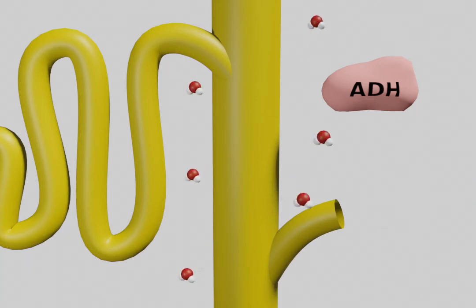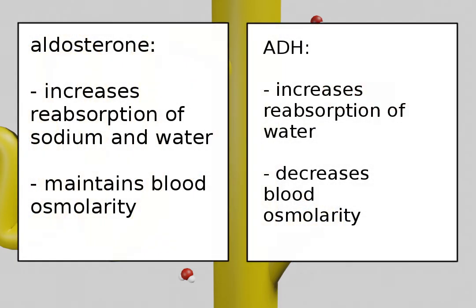So both of these hormones are antidiuretics, but there's a key difference you should notice. Aldosterone increases blood volume by reabsorbing both ions and water, so there's no change in blood osmolarity. ADH increases blood volume by reabsorbing only water, which lowers blood osmolarity.